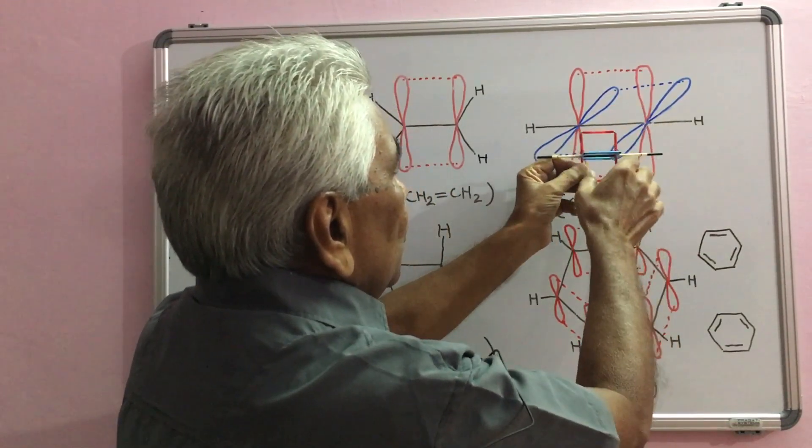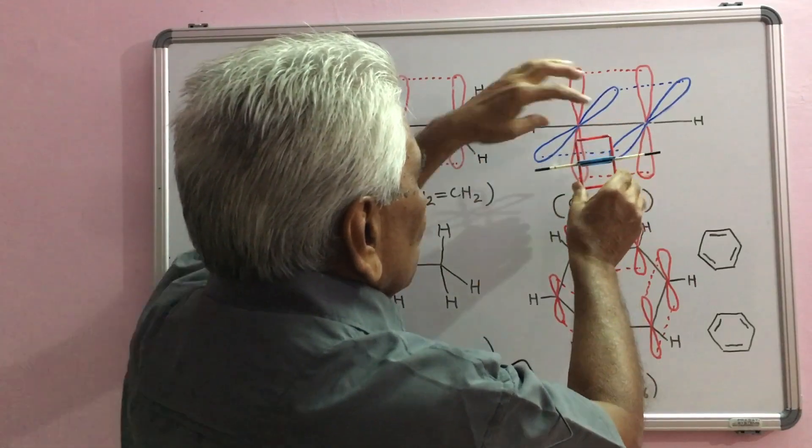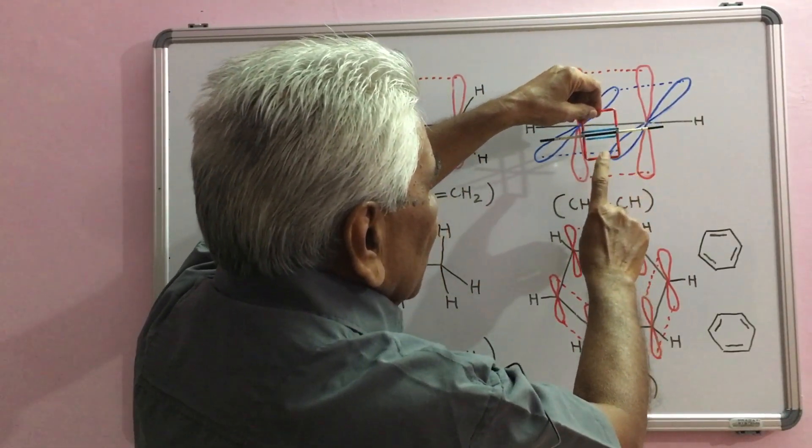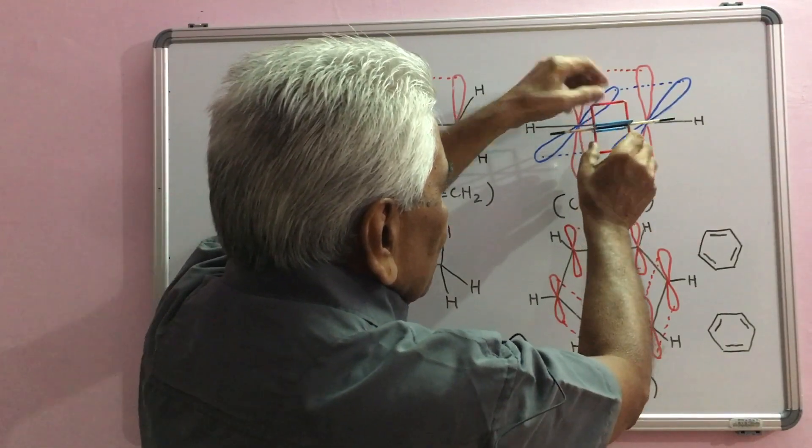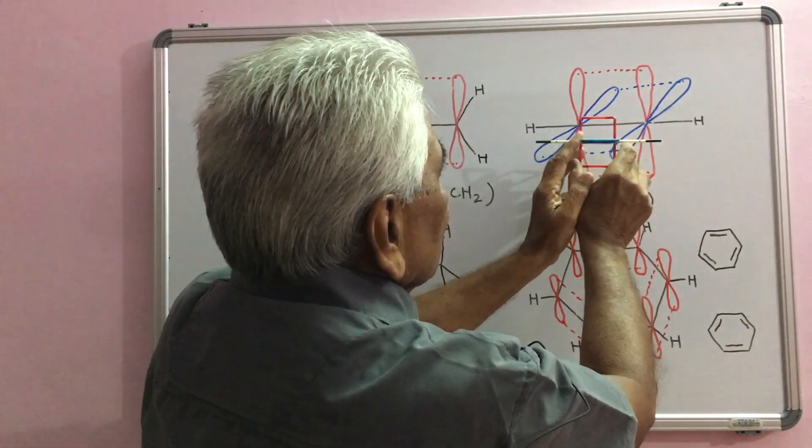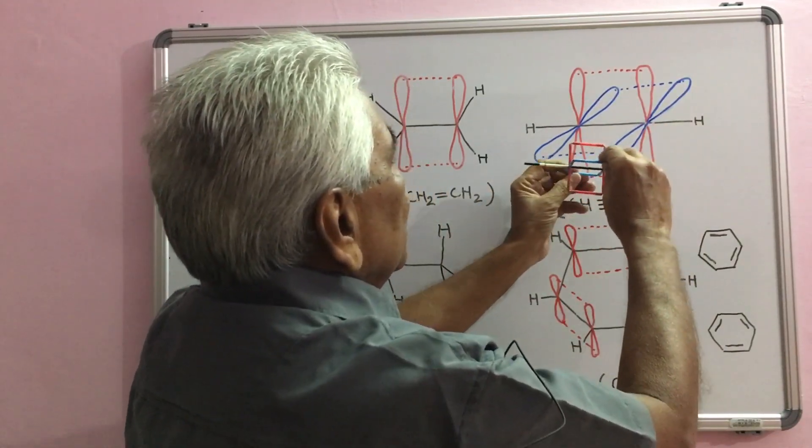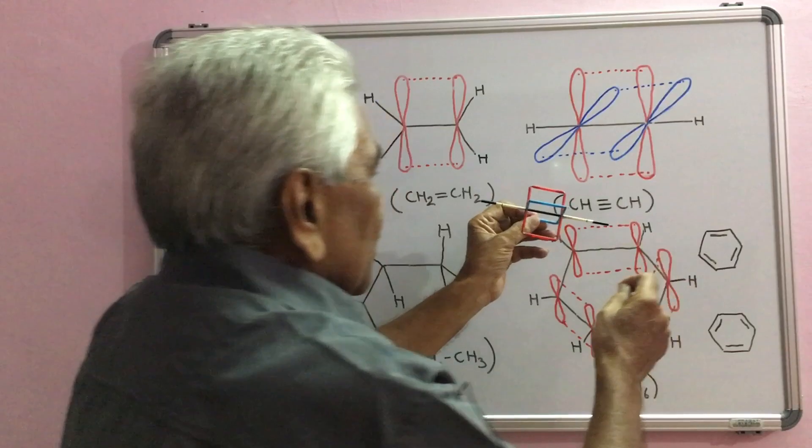These two parallel p orbitals overlap sideways to form one pi molecular orbital, and these two p orbitals which are shown here overlap sideways to form another pi molecular orbital.